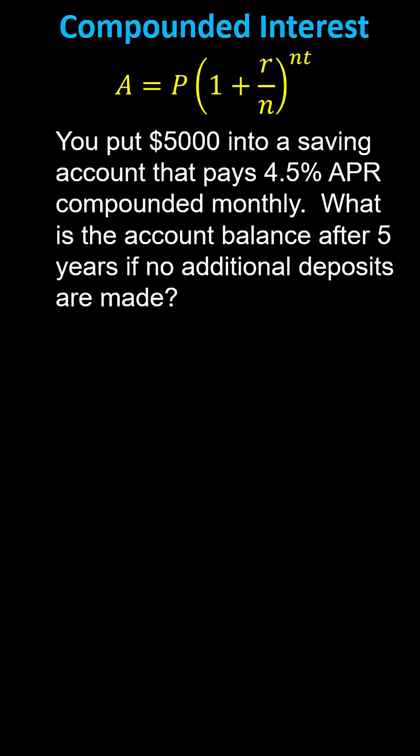The compound interest formula is A equals P times the quantity 1 plus R divided by N raised to the power of Nt.